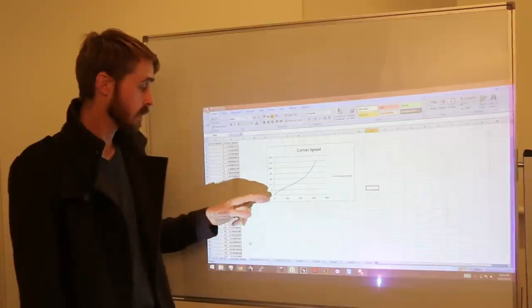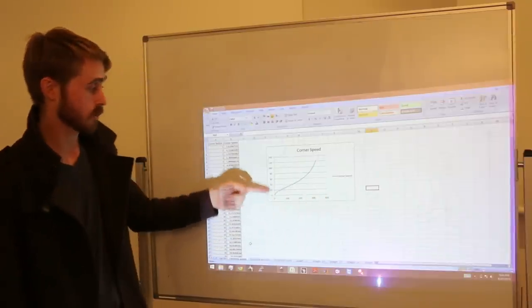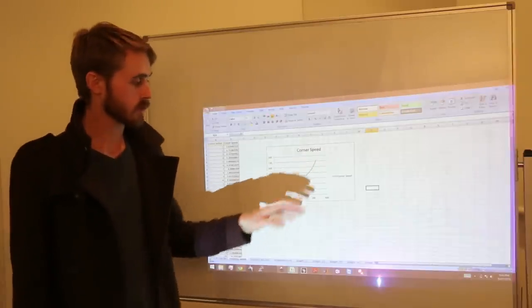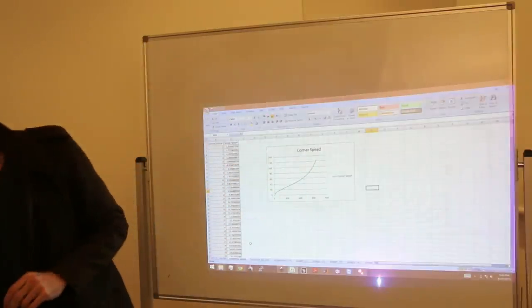I also have a handy plot for you using that formula I derived earlier. This is cornering speed versus cornering radius. So that's your cornering speed in Ks an hour versus the radius of your corner. Now with downforce, we get this really interesting profile. But I'll just show you what it's like without downforce for a second.